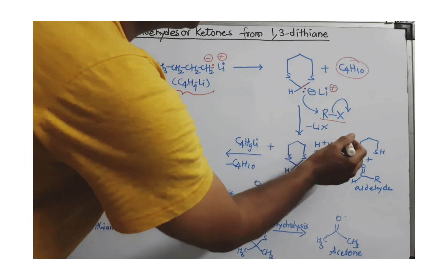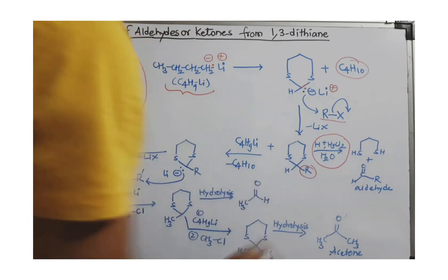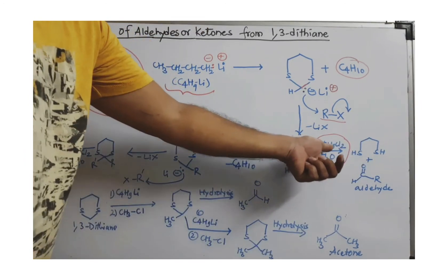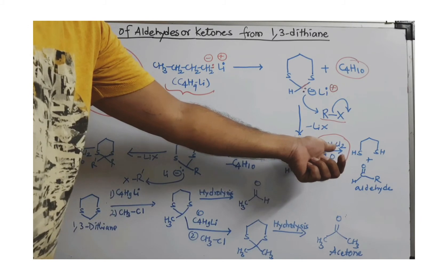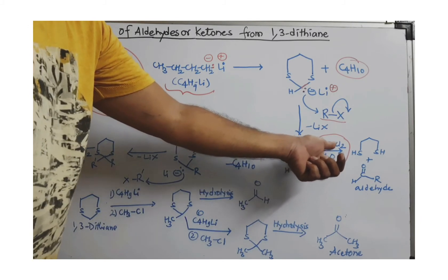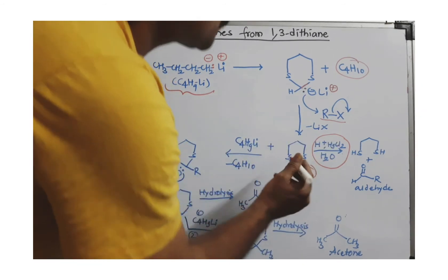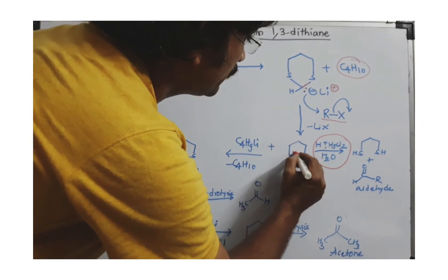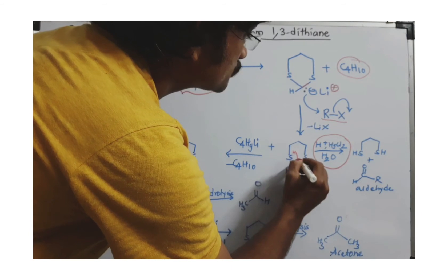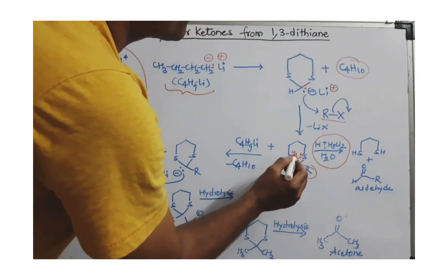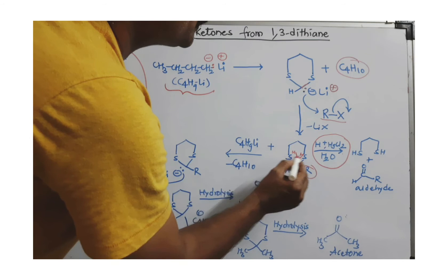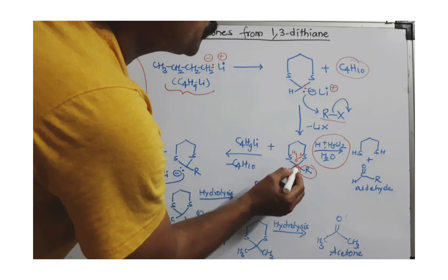If you want to stop this reaction here, you do the hydrolysis. For hydrolysis, you are using mercury chloride, acidic mercury chloride. You have to use HgCl2 and dilute acid. Hydrolysis is taking place, meaning breaking with the help of water.